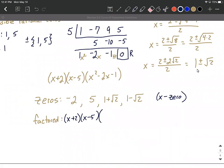x minus whatever the 0 is. So 1 plus the square root of 2 can go inside a set of parentheses. And x minus whatever the 0 is, 1 minus the square root of 2, we'll go in another set of parentheses.